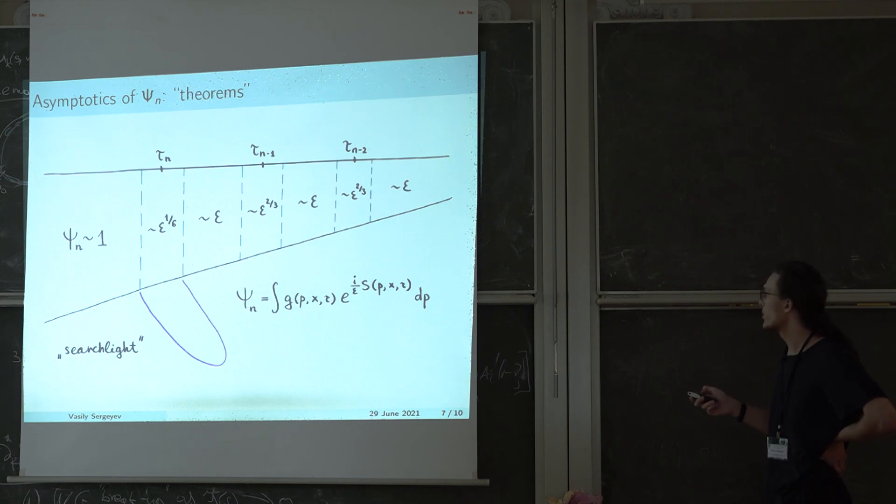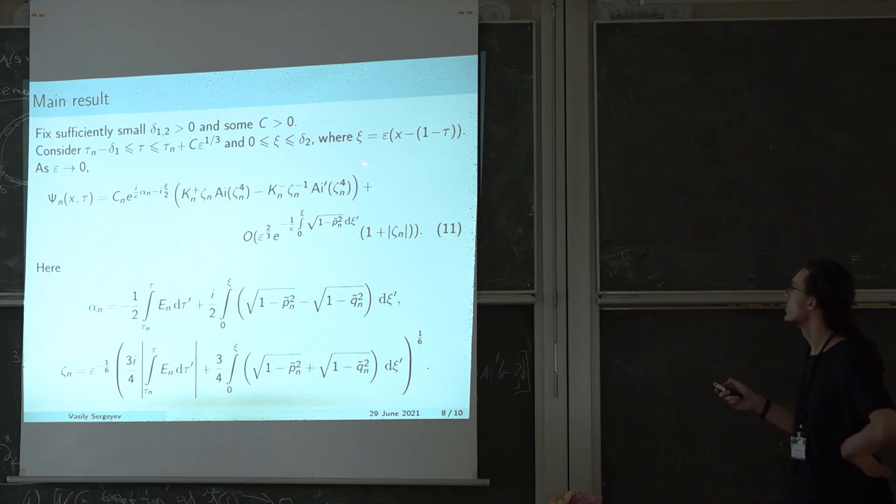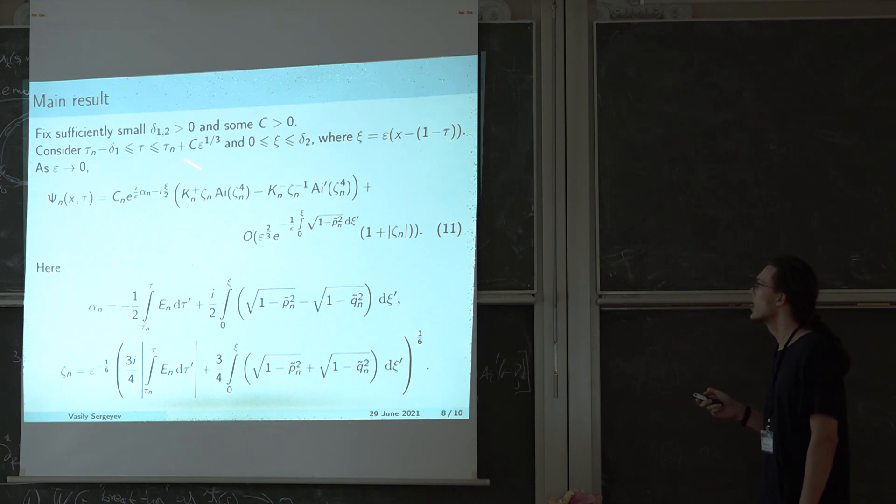So the formula we obtain is as follows. So we introduce a new rescaled variable psi, which is the distance from the edge of the potential well times the small parameter. And in these variables tau and psi, we have a uniform asymptotic formula roughly in a compact region up until the critical point tau n and for bounded psi.